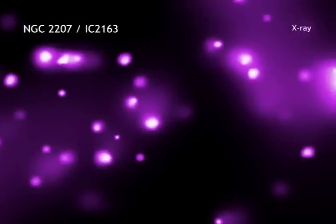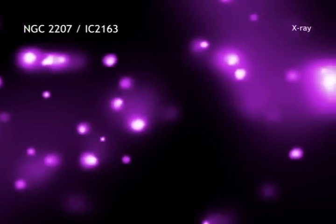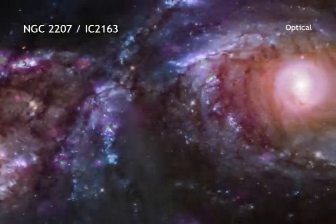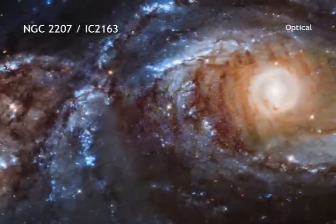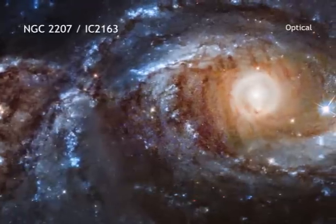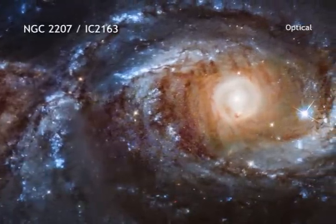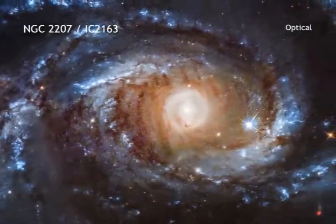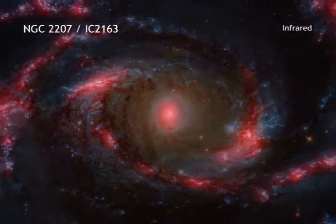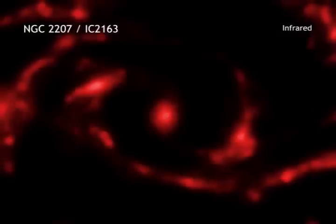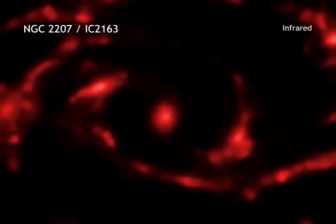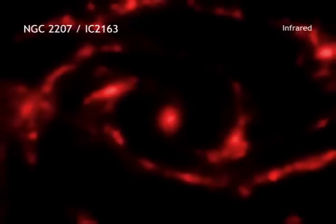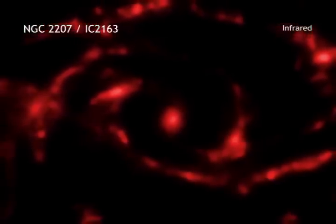As in our Milky Way galaxy, NGC 2207 and IC 2163 are sprinkled with many systems known as x-ray binaries, which consist of a star in a tight orbit around either a neutron star or a stellar-mass black hole. The strong gravity of the neutron star or black hole pulls matter from the companion star. As this matter falls toward the neutron star or black hole, it is heated to millions of degrees and generates x-rays.